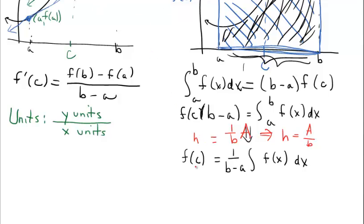One final thing: I want to talk about the units. What are typically the units of an average value question? Well, F of C is actually a y value. So if you know what the y units are — because they're given to you, the units of the function — that's going to be the units of your answer. If you're finding an average value, and they say indicate units of measure, you just use the y units they give you for the function.